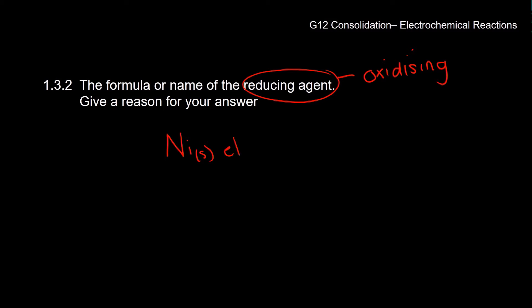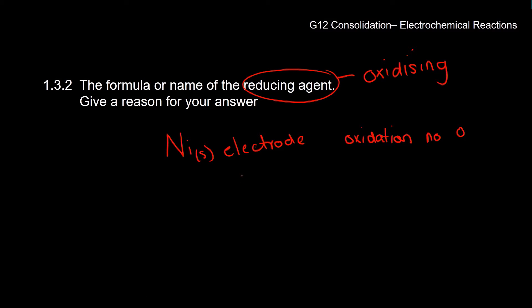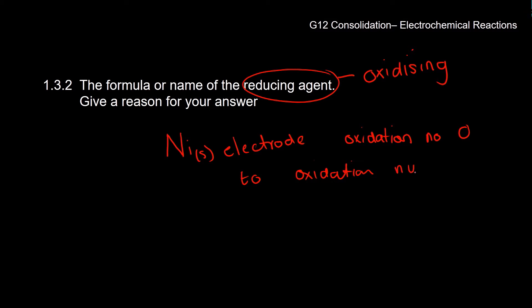The reason: the nickel electrode gives electrons away and moves from an oxidation number of zero to an oxidation number of 2+. That increasing oxidation number confirms it is oxidized, making solid nickel the reducing agent.